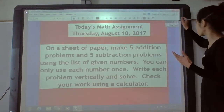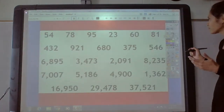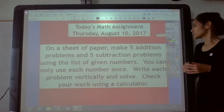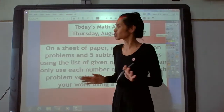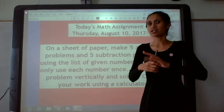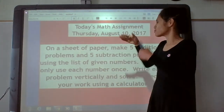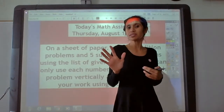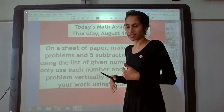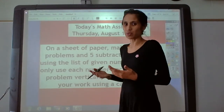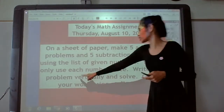I'm going to give you a list of numbers — let me show it to you real quick. Here's a list of numbers. So using that list of numbers — and don't worry, I will put it back on the screen — you will select two numbers. You're going to make five addition problems and solve them, five subtraction problems, and then solve those. Now when we write our problems, we need to write them vertically.